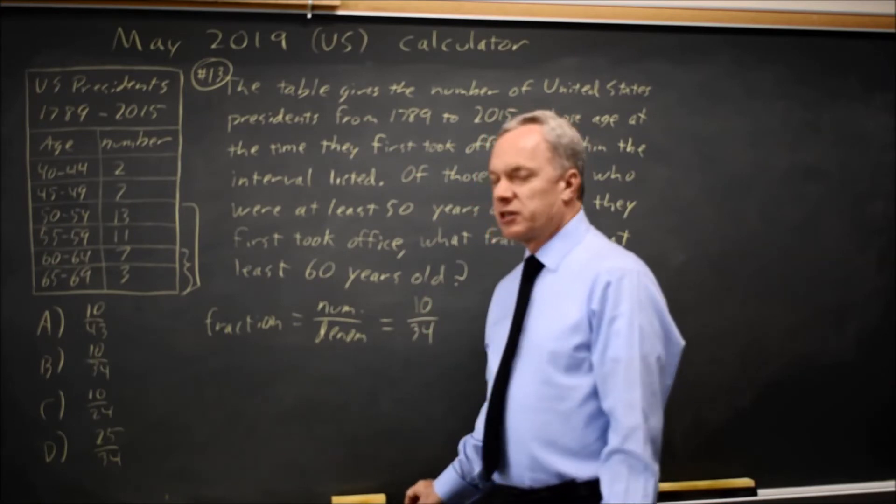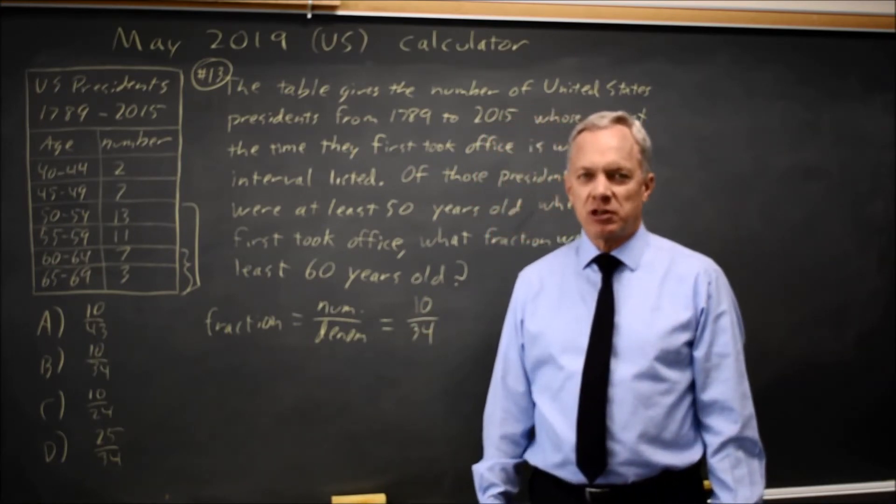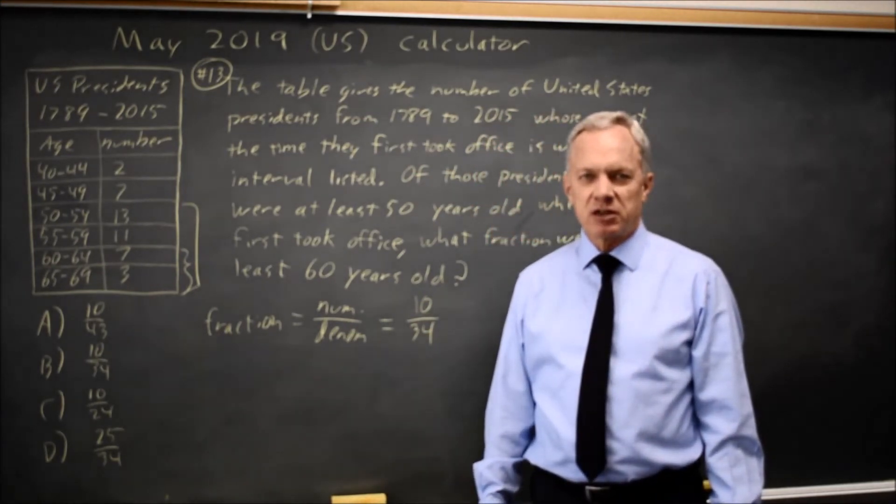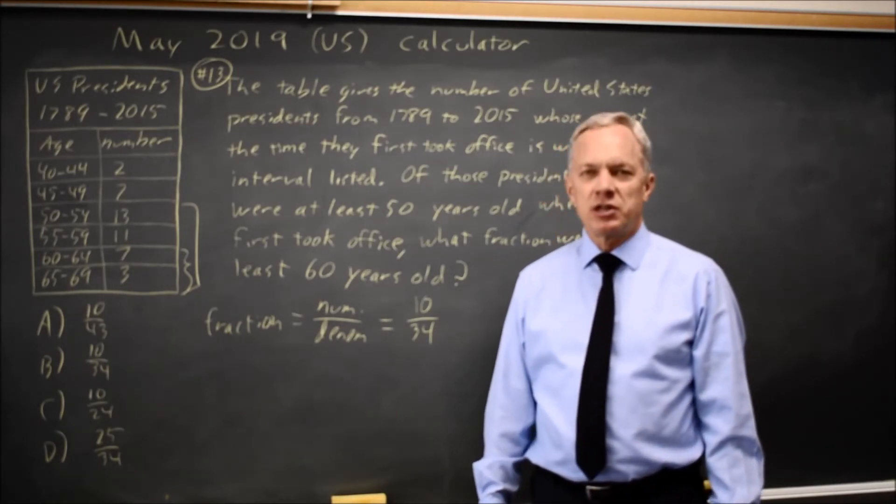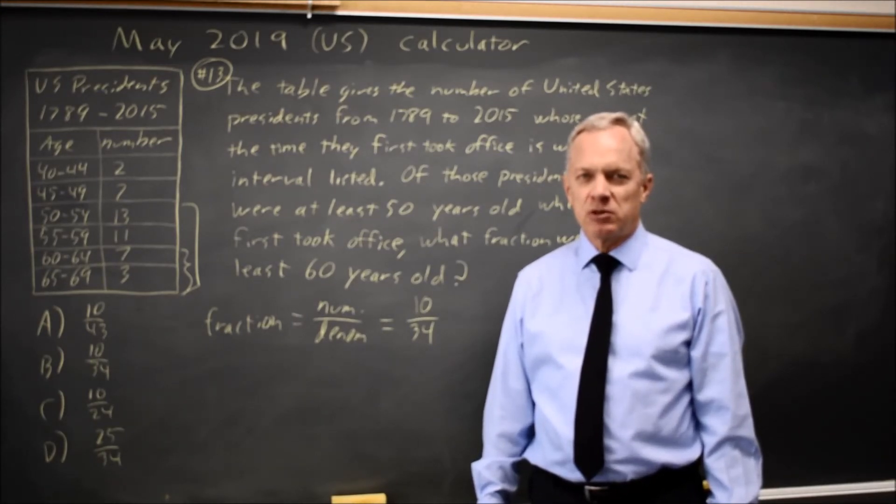I always find my denominator first, because the numerator can only be individuals who are counted for the denominator. Often they'll ask this question with a table with multiple columns, and you have to figure out which rows or columns, or perhaps the entire table, is included.